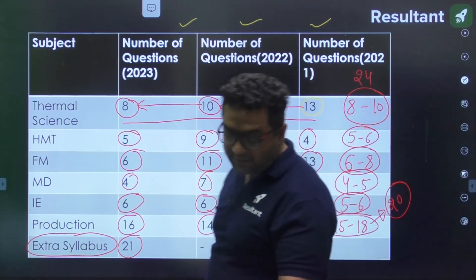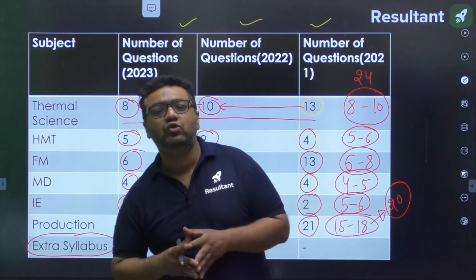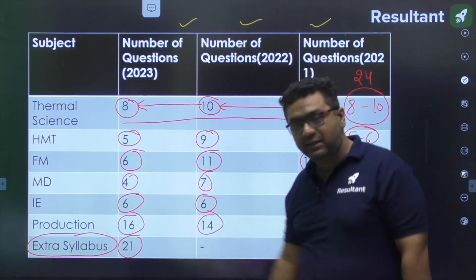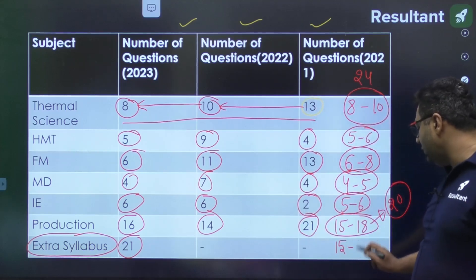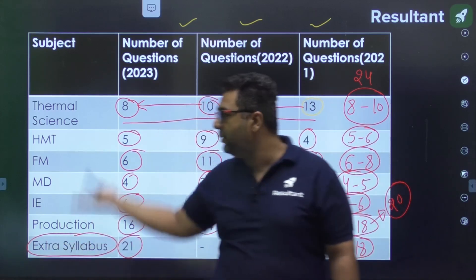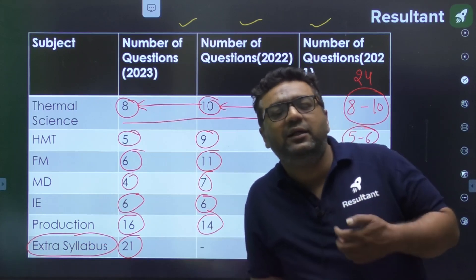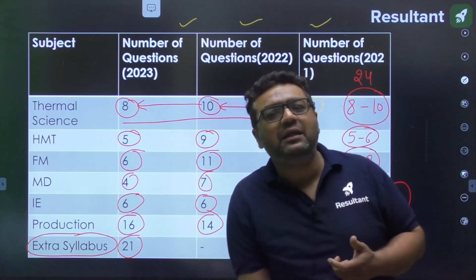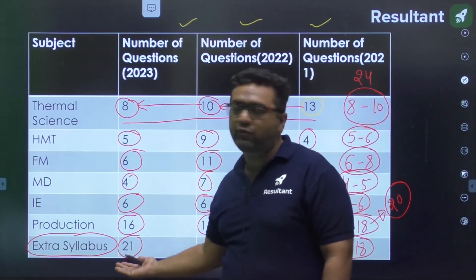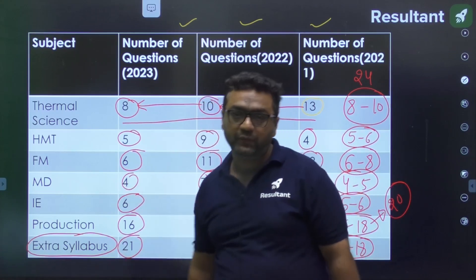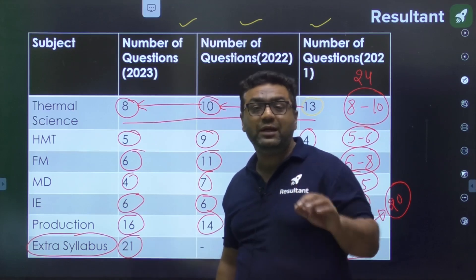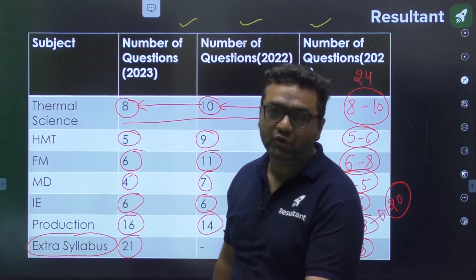Extra syllabus, if it's going to be there this year also, which ideally should be because they follow the previous year trend, then you can expect approximately 15 to 18 questions or up to 20 from that area. If that will not be there, these 20 questions will be distributed to all subjects and you can expect an increase of 2 to 3 questions in all subjects. The major advantage will go to Production. Previously Production had 21, if that syllabus is removed, at least 5 questions will go to Production. Out of the 16 Production questions, 8 to 10 are from Material Science, rest 8 from other parts. Material Science is more important for HPCL exam.